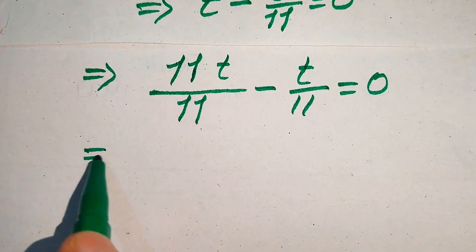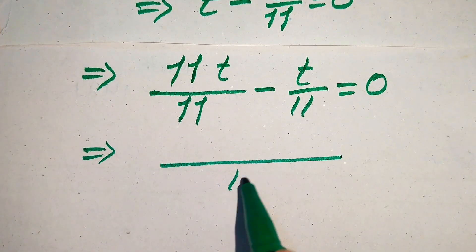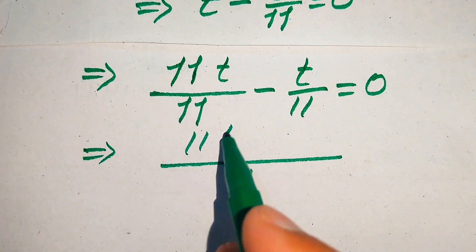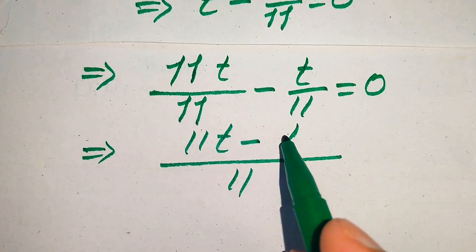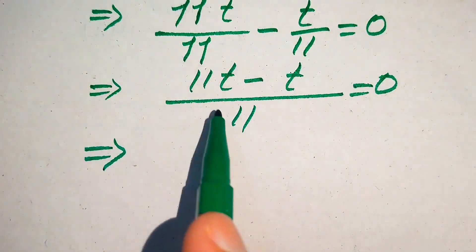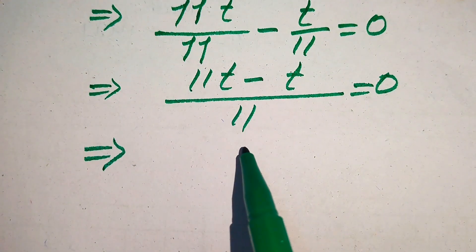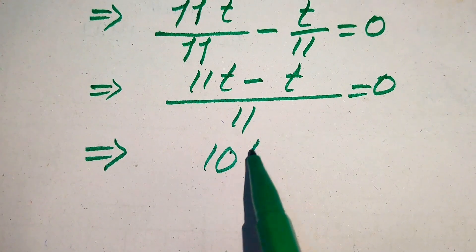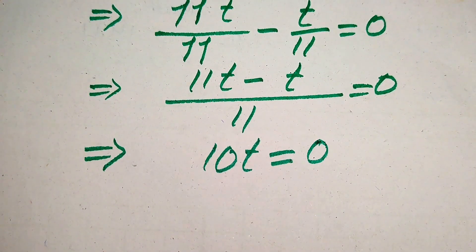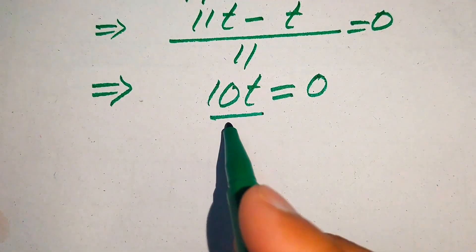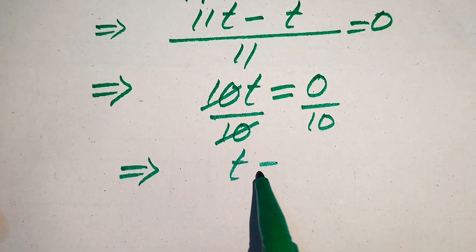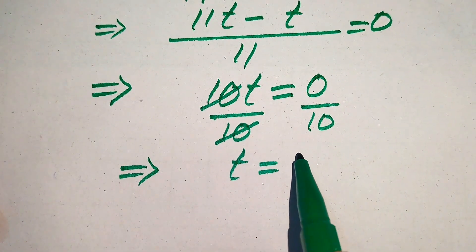Since the denominators are now the same, we take the LCM as 11. The 11s cancel and we get 11t minus t equals 0, which simplifies to 10t equals 0. Moving the 11 to the right-hand side gives 10t equals 11 times 0, which is 0. Dividing both sides by 10, the 10s cancel and we get t equals 0 divided by 10, which equals 0.